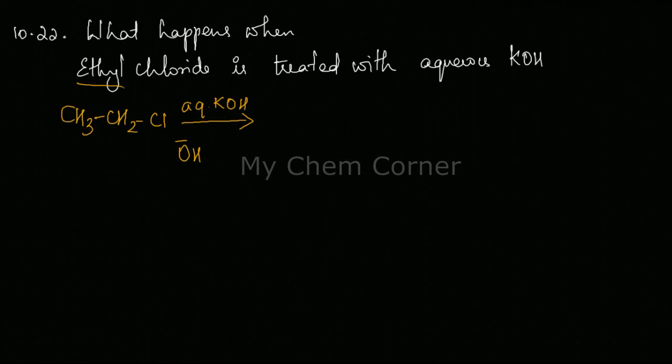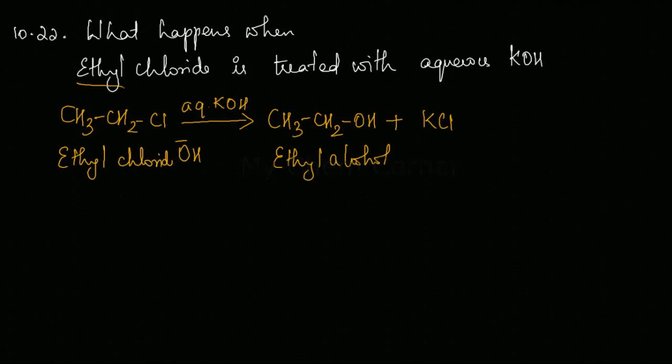So I'm going to write the product here. When I have CH3-CH2-OH plus the Cl that went out is going to form bond with K to form KCl. So here it has formed ethyl alcohol from ethyl chloride. It is just a simple substitution reaction.